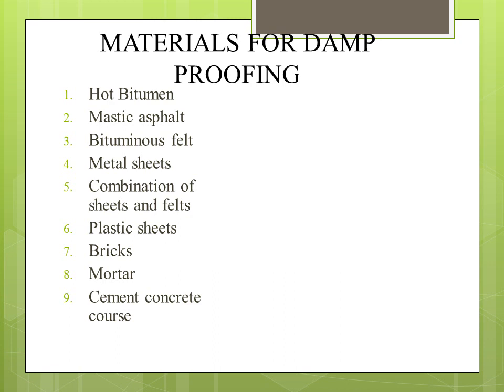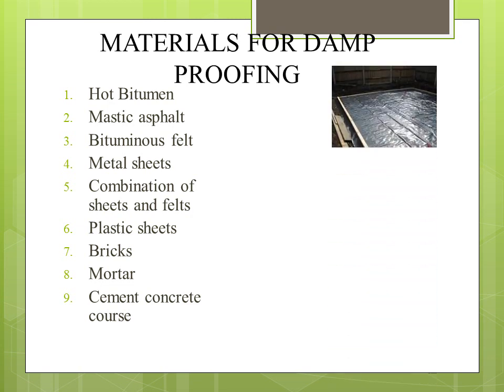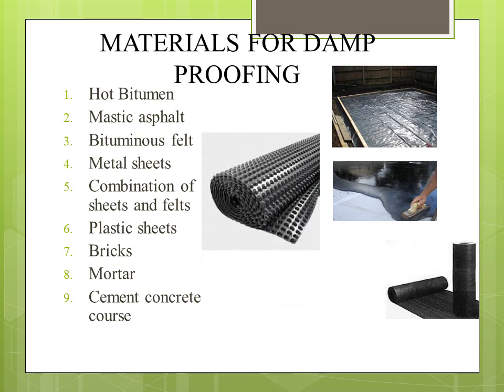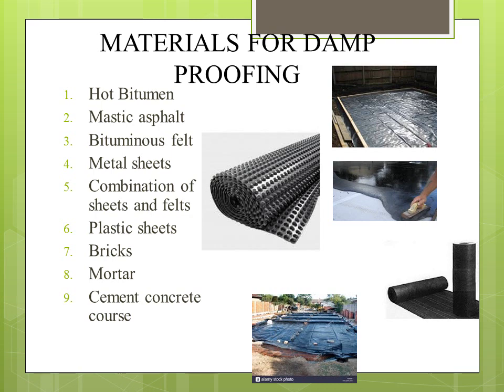Commonly used materials for damp proofing are hot bitumen, mastic asphalt, bituminous felt, metal sheets, combination of sheets and felts, plastic sheets, bricks, mortar and cement concrete. As you can see, hot bitumen is applied in the basement. Mastic asphalt is similarly applied in layers. Bituminous felt is available in sheets. Metal sheets and plastic sheets are also used — plastic sheets are highly impervious. Bricks, mortar and cement concrete are also familiar materials used for damp proofing.